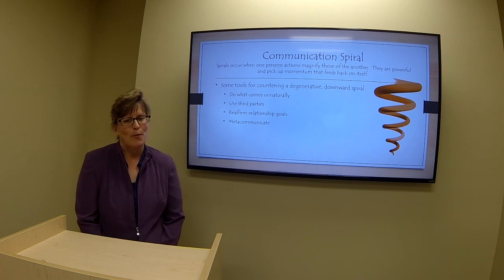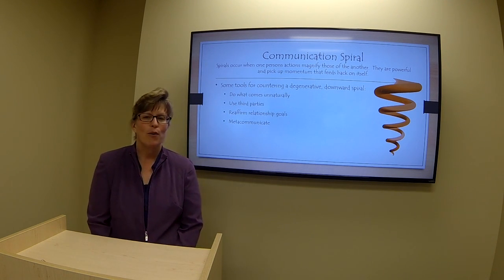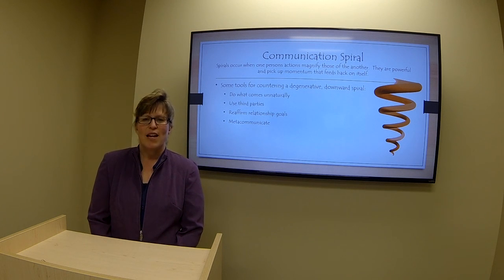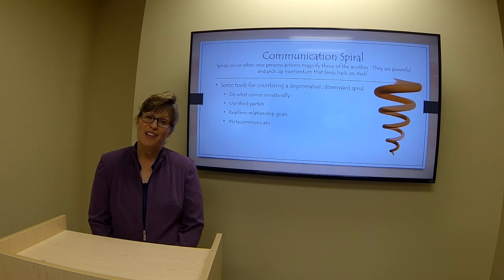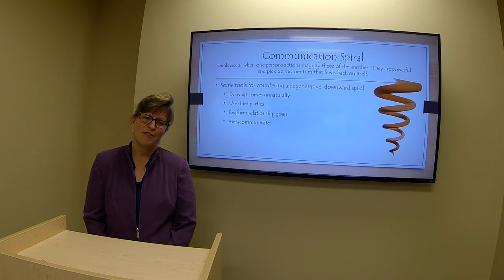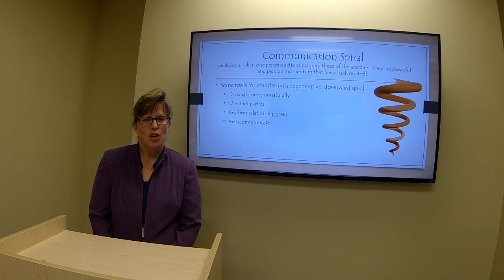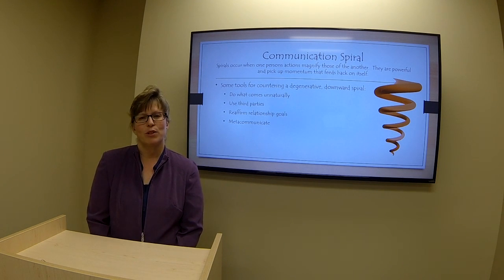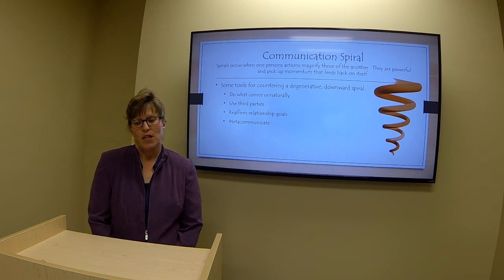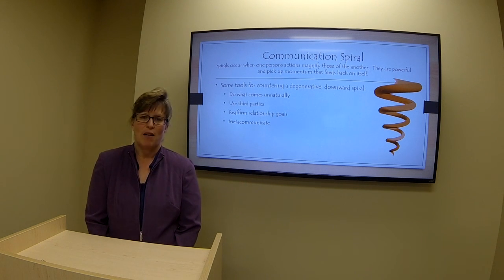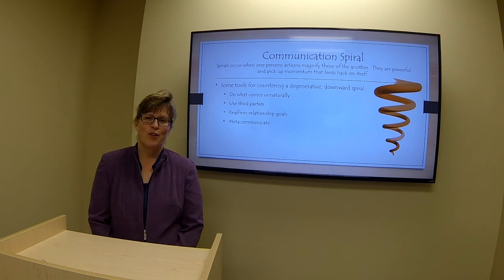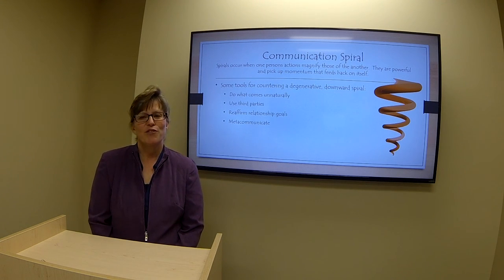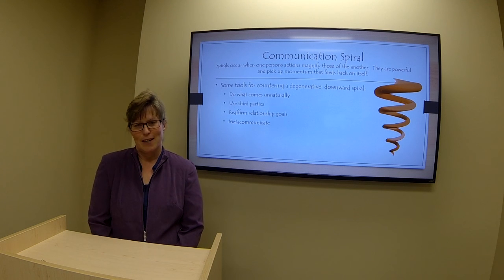My last composite goal deals with understanding the power of communication spirals. As one person's actions magnify those of another, they pick up momentum that feeds back on itself. This is great if the spiral is a positive or generative one, but it's destructive if the spiral is a downward or degenerative one. To reverse a degenerative spiral, do what comes unnaturally: enlist third party perspective, reaffirm the goals of the relationship, and metacommunicate.